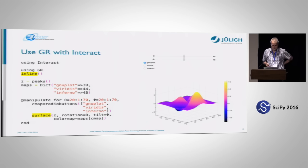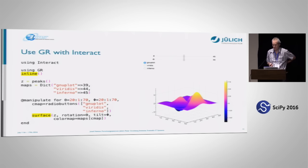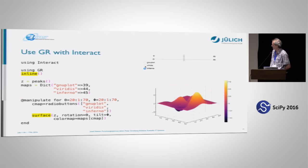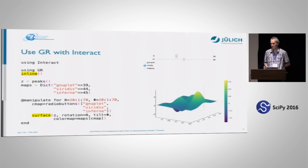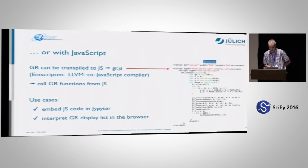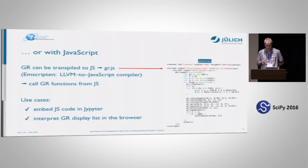Another very popular way to work with the GR framework is to use the Interact module. That means you can use Interact or React in a Jupyter notebook to move the graphics with some sliders or to change the color maps as shown here. I'll show this later in a live demo so you can see that it works. The performance is really there — you can even produce three-dimensional graphics in your browser and change the rotation and tilt angles and all that.